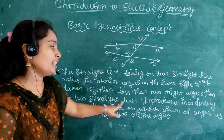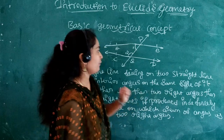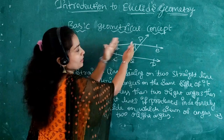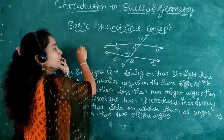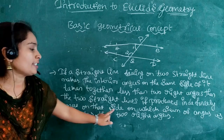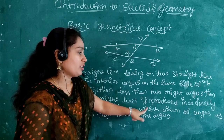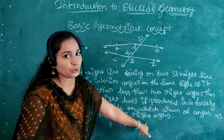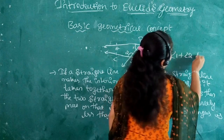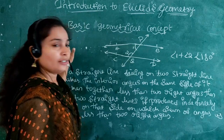If the two straight lines are produced indefinitely on the side where the sum of interior angles is less than 180 degrees, they will meet at one point on that side. So angle 1 plus angle 2 is less than 180 degrees — this is the fifth postulate.